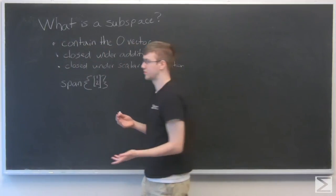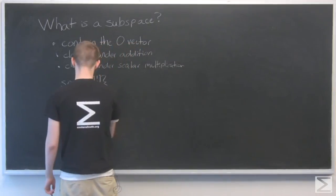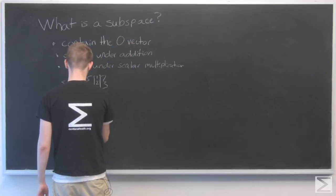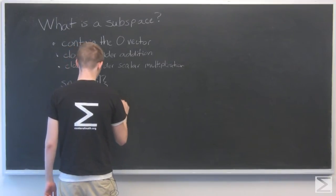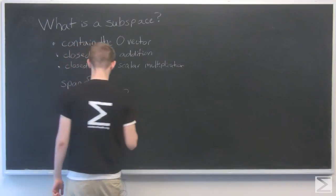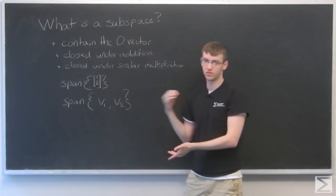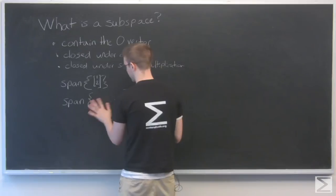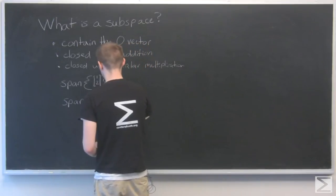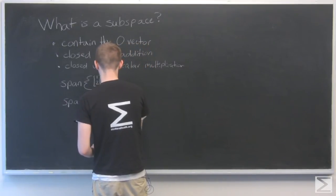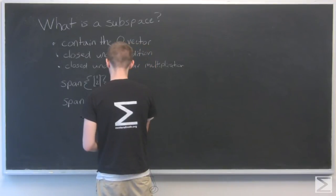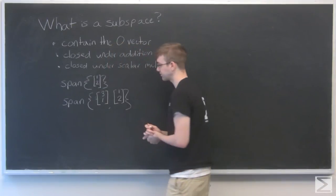So that's the span of one vector. Another example would be the span of multiple vectors. Big surprise. So again, just linear combinations of two vectors. So for example, let's say that v1 is 3, 1. And v2 is 1, 2.